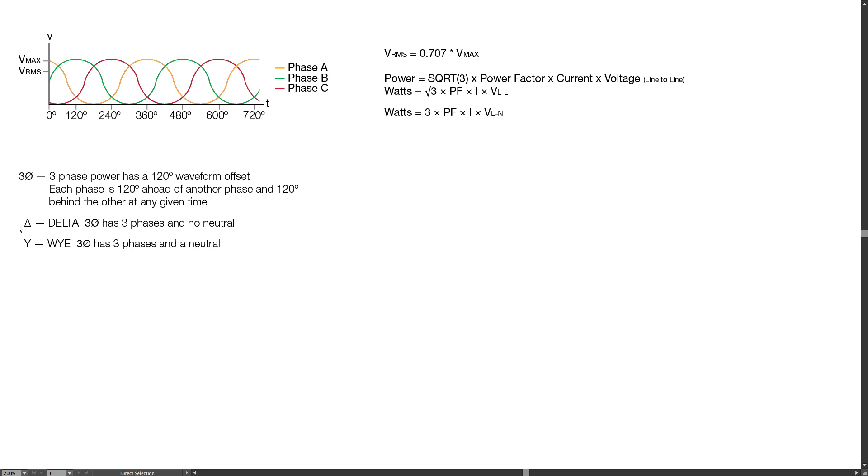The main difference between a delta and a Y configuration is that delta has no neutral and a Y has a neutral. This is important because you can get different voltages on the Y than you can on the delta. Delta can only do line-to-line, but a Y can also do line-to-neutral.